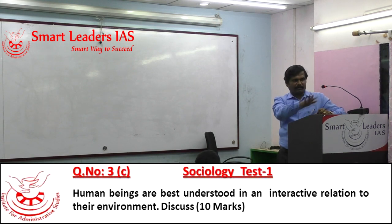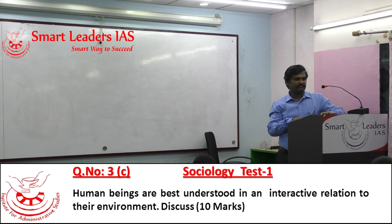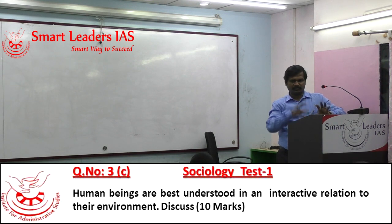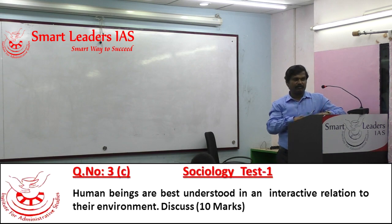Sociology, according to non-positivism, is not a science. They rejected the role of sociology as a science because science studies only objects, whereas sociology studies subjects. Since the subject matter differs, the methodology also should differ, the principles also should differ, and the laws of science have no place in sociology.